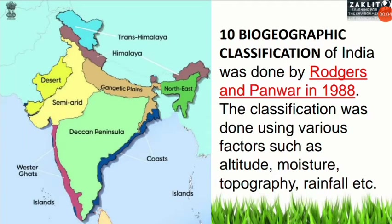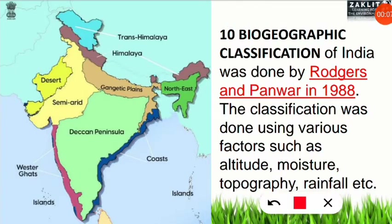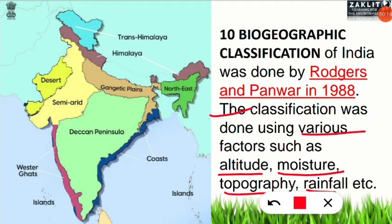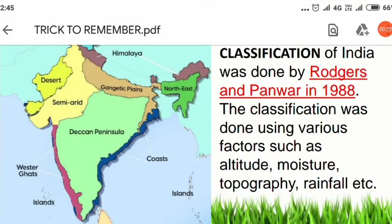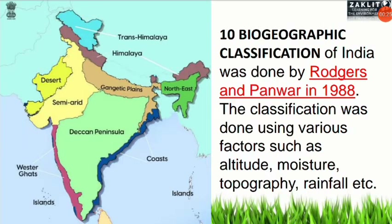Now the question arises: what is the basis of this categorization? This classification was done using various factors such as altitude, moisture, topography, and rainfall in each area. On this basis the zones were divided into ten categories.